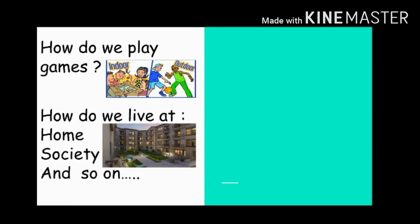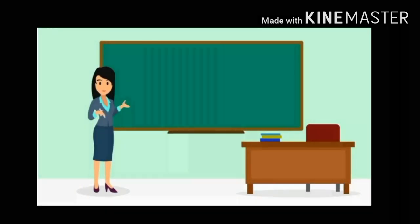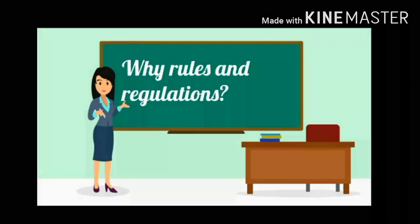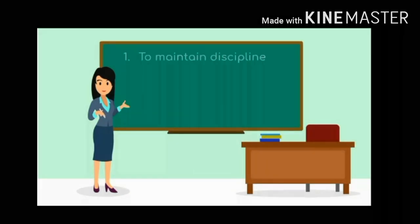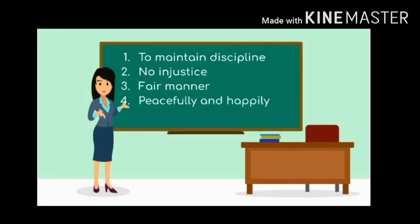Children, how do we play games? How do we live at home, in society, and in school? The answer is simple — according to rules and regulations. We even follow rules and regulations at school. Why rules and regulations? Very simple: to maintain discipline, so no injustice is done, everything is done in a fair manner, and to stay peacefully and happily.